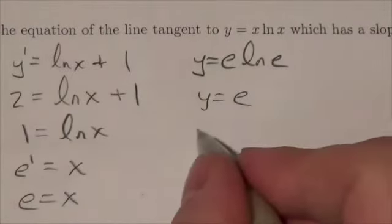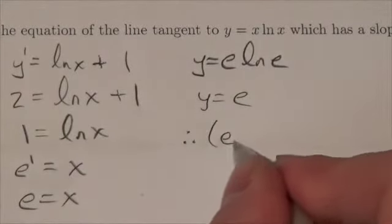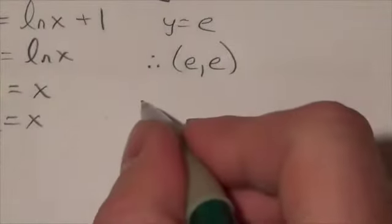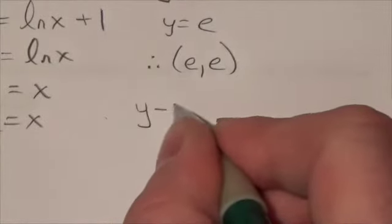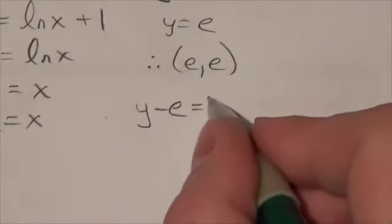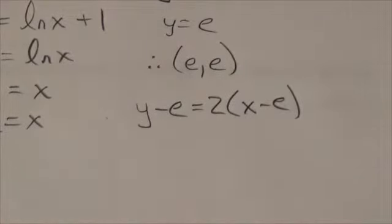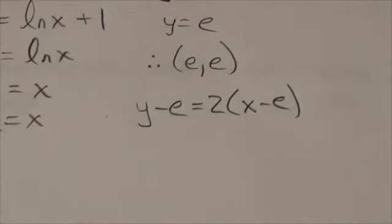So therefore the point that I'm interested in is the point (e, e). All right, so now I've got everything I need. I know the slope and I know the point, so I'm going to use point-slope form: y minus e is equal to 2 times (x minus e). And there you go, there's the equation of the tangent line that has a slope of 2.